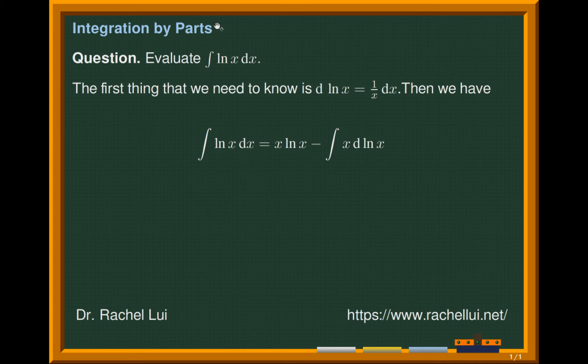So first of all, according to the rule of integration by parts, we multiply these two functions. So we have x log x, and then we subtract. We swap these two functions, so we subtract and integrate x dx log x.